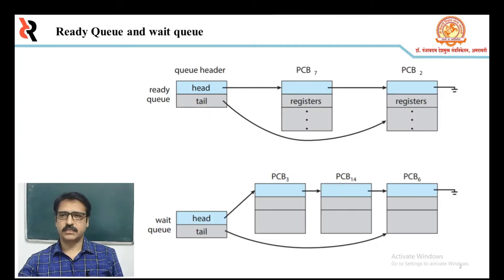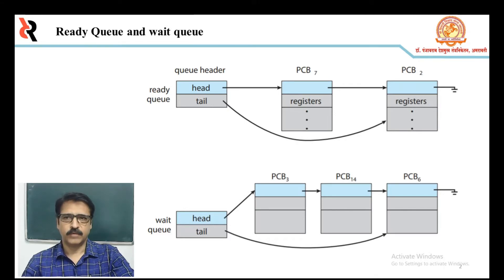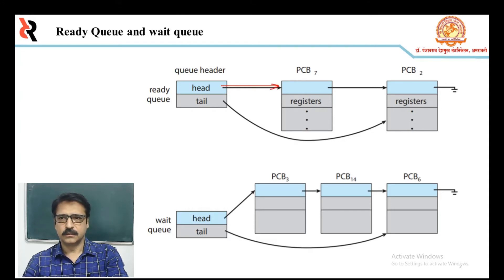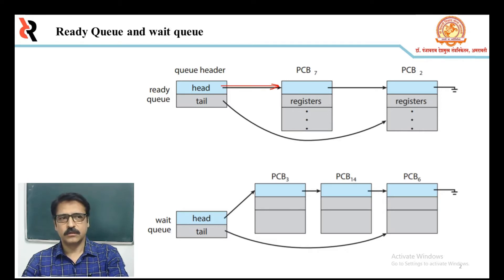Let us see the scheduling queues. As processes enter the system, they are put into a ready queue where they are ready and waiting to execute on a CPU core. This queue is generally stored as a linked list. A ready queue header contains a pointer to the first PCB in the list, and each PCB includes a pointer field that points to the next PCB in the ready queue.